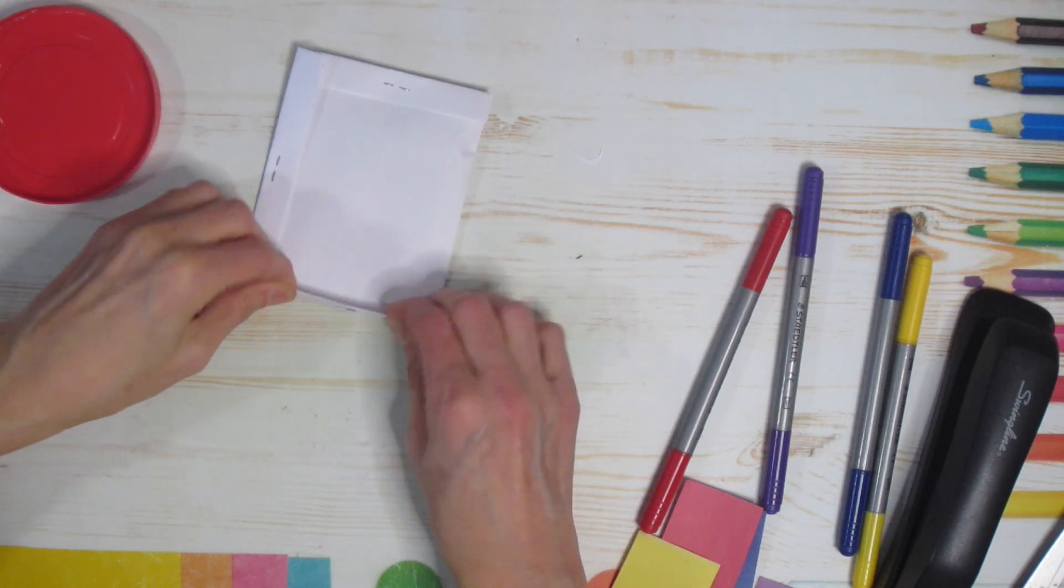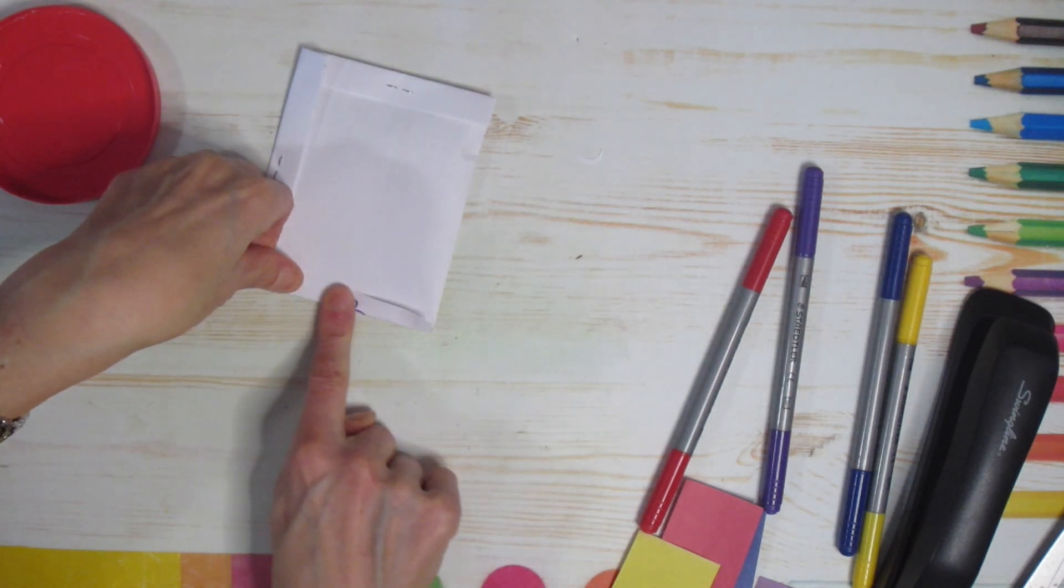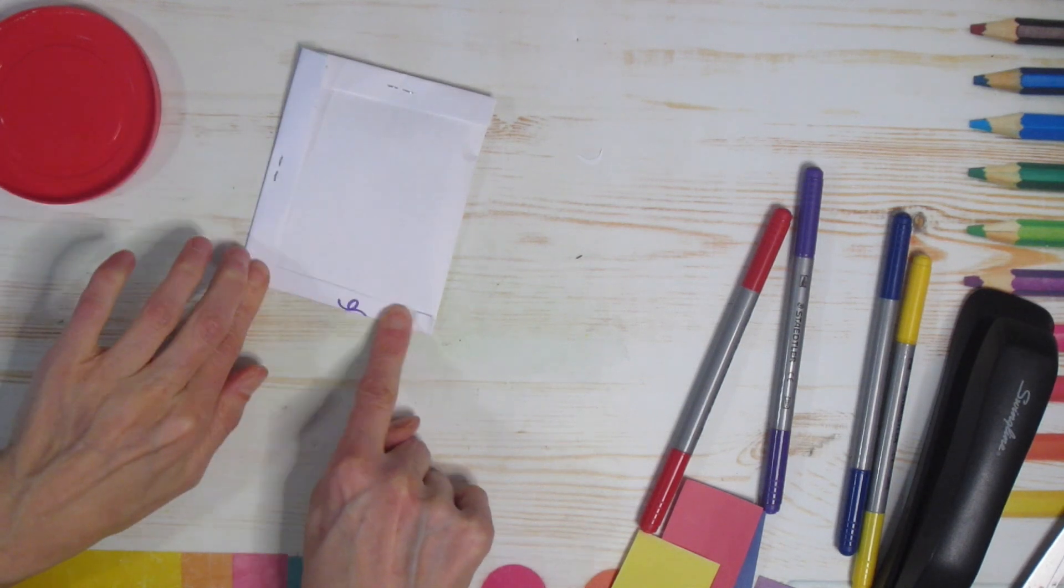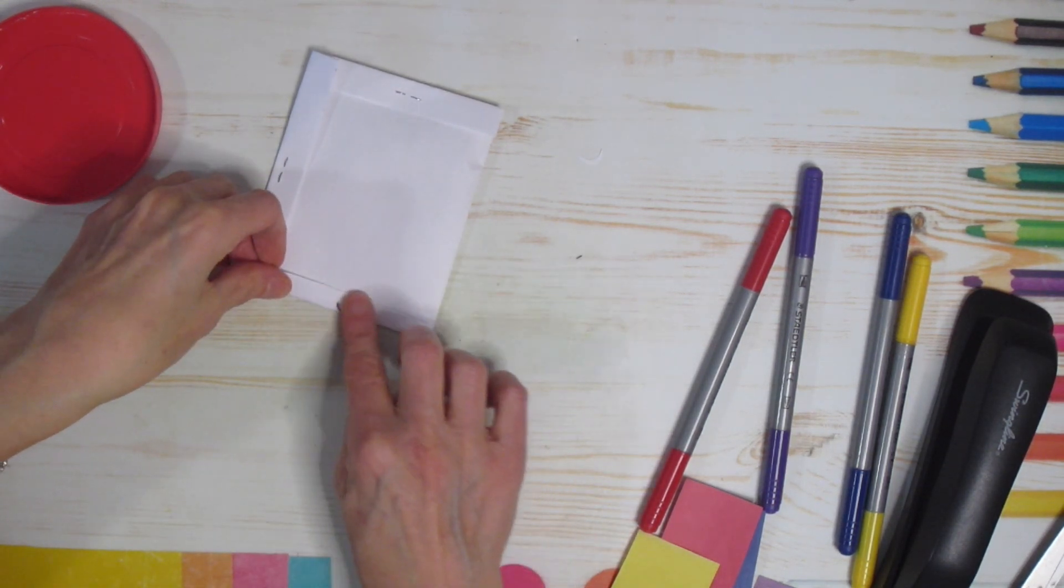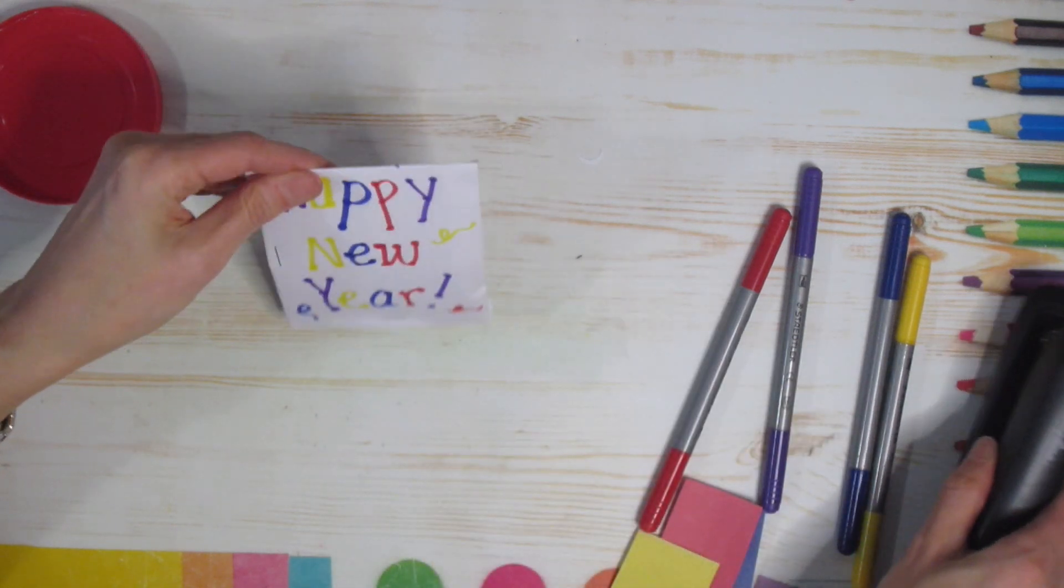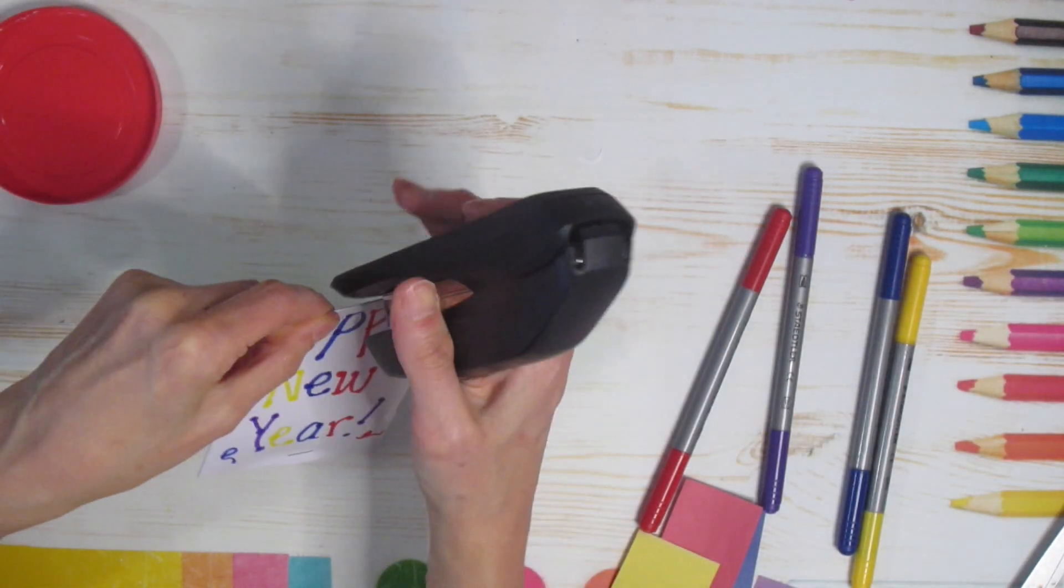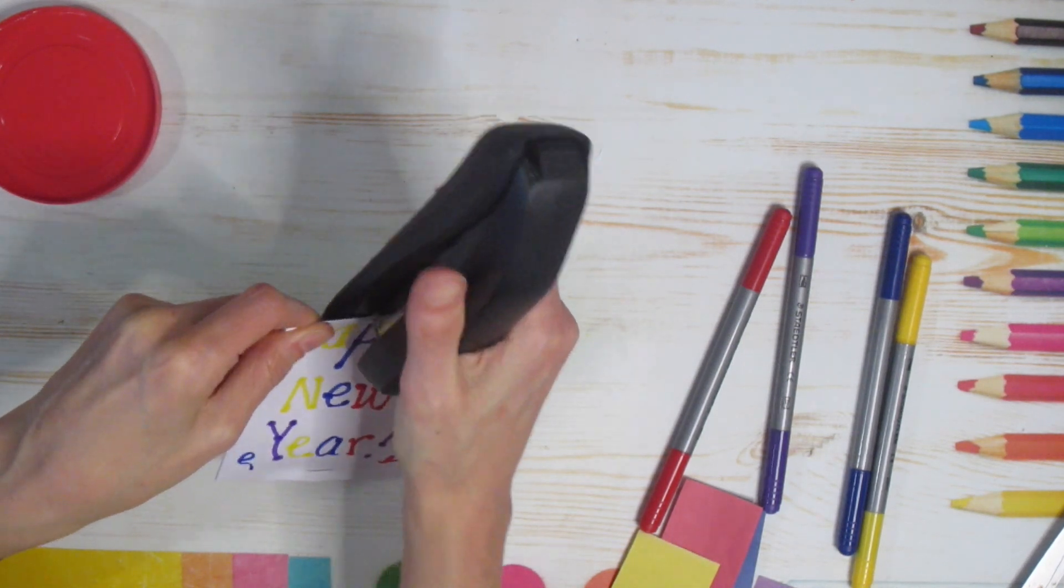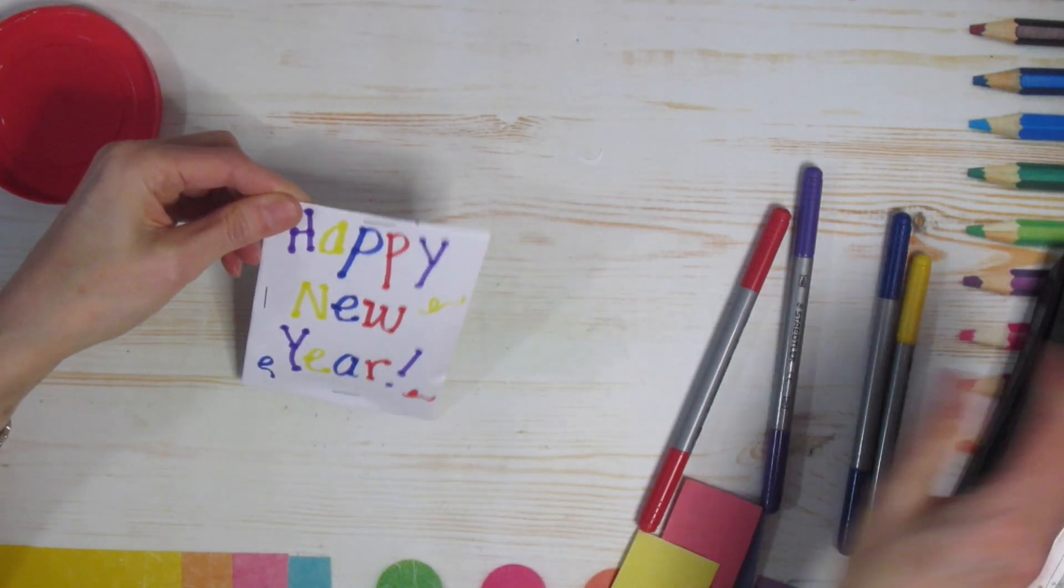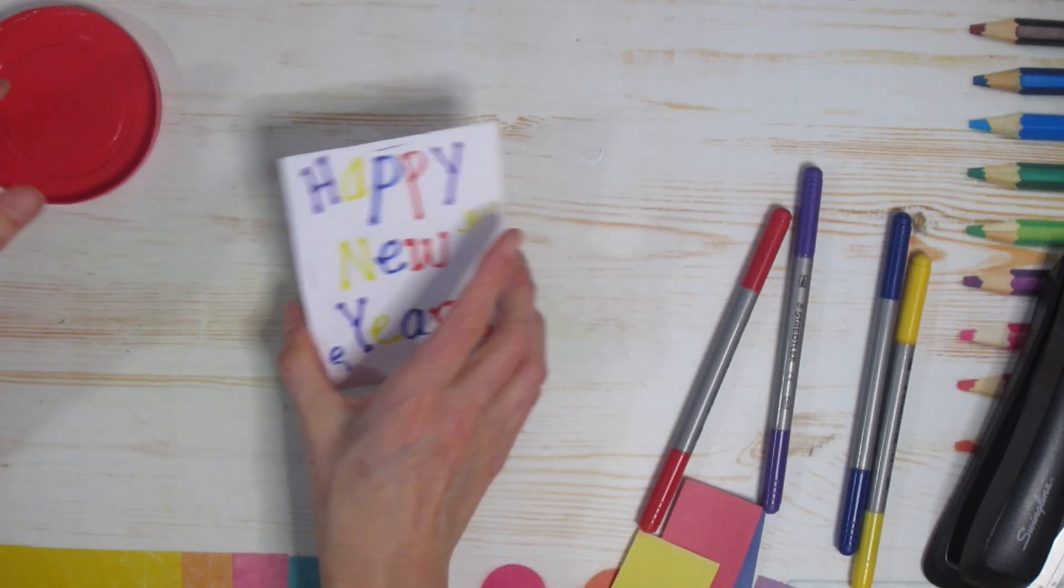you're gonna go to the top and you're just gonna fold it over. Whoops, part of my little decoration. That's okay. So I'm folding it over and then you're either gonna glue it or if you have a stapler, go ahead and staple. Perfect. And now you can see it makes lots of noise.